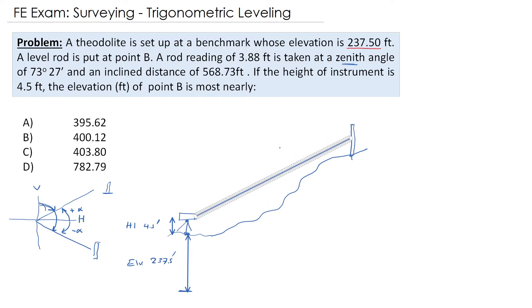We are looking upward and this is the vertical line and this is the angle, the zenith angle, which is 73 degrees 27 minutes. This is the horizontal distance that we have, and this is the elevation difference between the reading at the rod and the instrument we have.